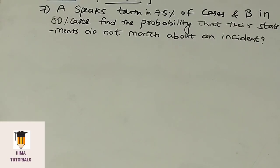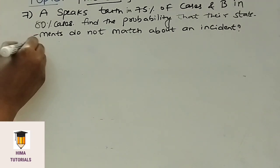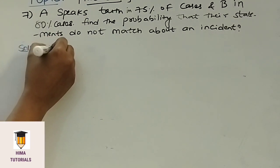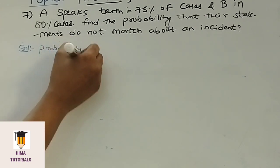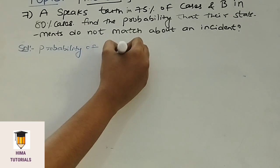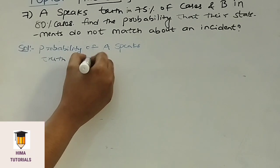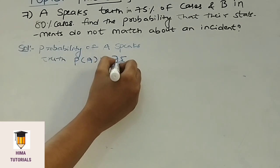Coming to the next question. A speaks truth in 75% of cases and B in 80% of cases. Find the probability that their statements do not match about an incident. Coming to the solution. In the question, A speaks truth in 75% cases, whereas B in 80% cases. That means probability of A speaking truth, P of A, is equal to 75 by 100.